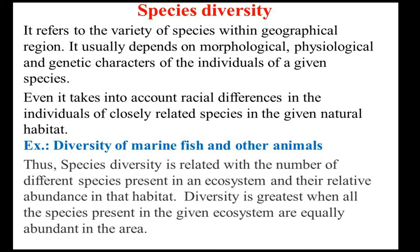We will now consider species diversity, that is interspecies diversity — also called organismic or taxonomic diversity. It refers to the variety of species within a geographical region. It usually depends upon the morphological, physiological and genetic characters of individuals of a given species, and takes into account racial differences in individuals of closely related species in a given natural habitat. For example, diversity of marine fish and other animals. Species diversity is related to the number of different species present in an ecosystem and their relative abundance in the habitat. Diversity is greatest when all species present are equally abundant.